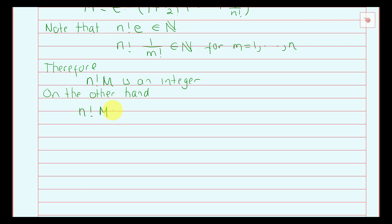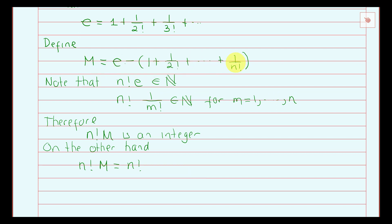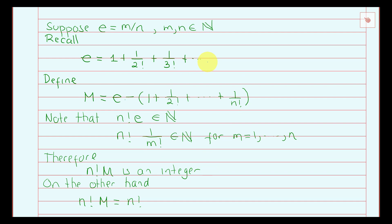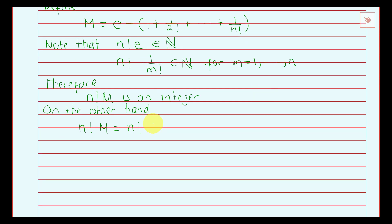On the other hand, n factorial times m is the same as n factorial times the tail series. Remember that m equals the full series minus the n-th partial sum, so m can be written as the sum starting from 1 over n plus 1 factorial onward. So this becomes n factorial times the sum: 1 over n plus 1 factorial plus 1 over n plus 2 factorial and so on.